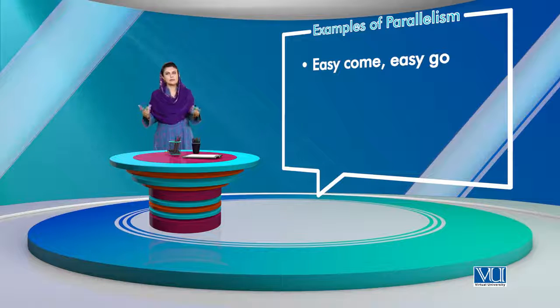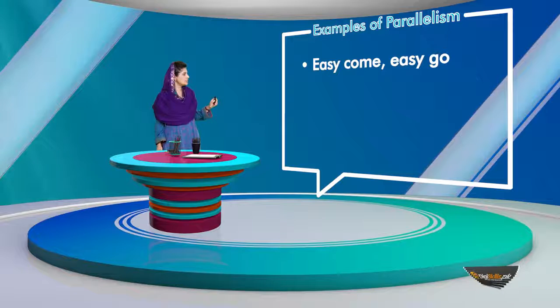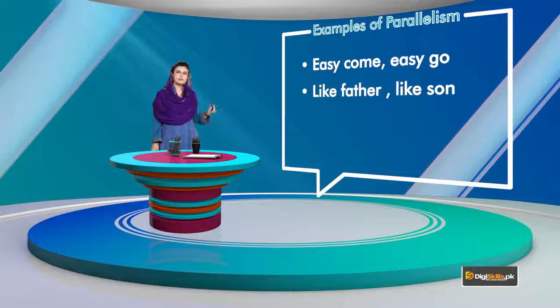This is used for wealth — 'easy come, easy go.' Another example: 'like father, like son,' or 'like son, like father.' The same grammatical pattern is repeated in both parts.